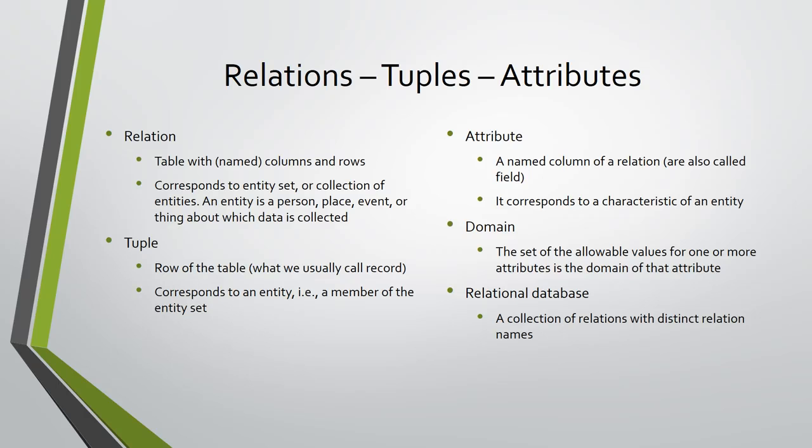The contents of the table cells are the values of the corresponding attributes of the entity. The set of allowable values for one or more attributes is the domain of that attribute. A relational database is a collection of relations with distinct relation names, possibly linked together.